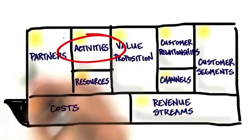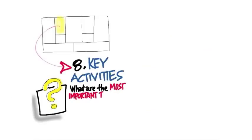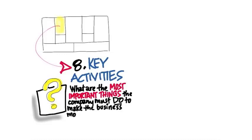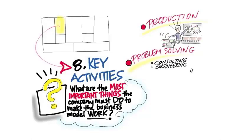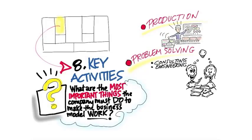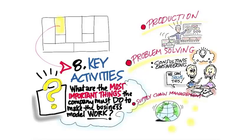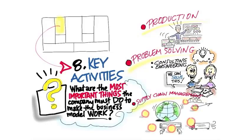Next are key activities — the most important things you need to do to make the business model work. Are you in the production business, making something? Are you in the problem-solving business, like consulting or engineering? Or are you managing supply chains? What are the key activities you need to become expert at?